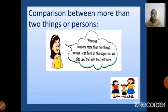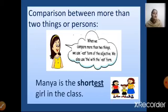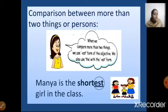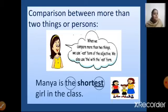Look at the picture, children — three girls are there. Let us see the sentence: Manya is the shortest girl in the class. We have added -est to the adjective 'short' and we have also written 'the' along with it. Manya is the shortest girl in the class.